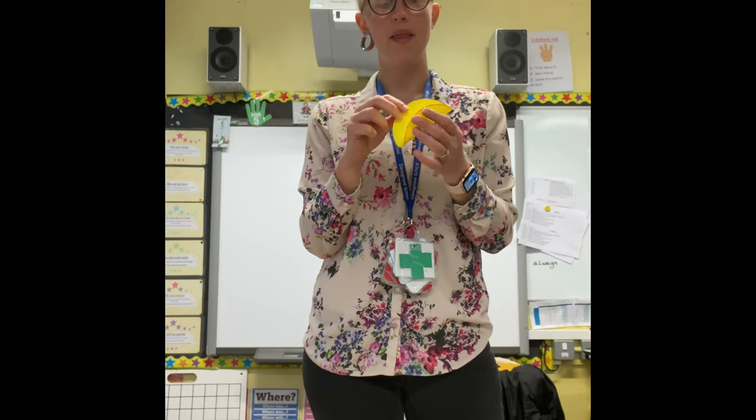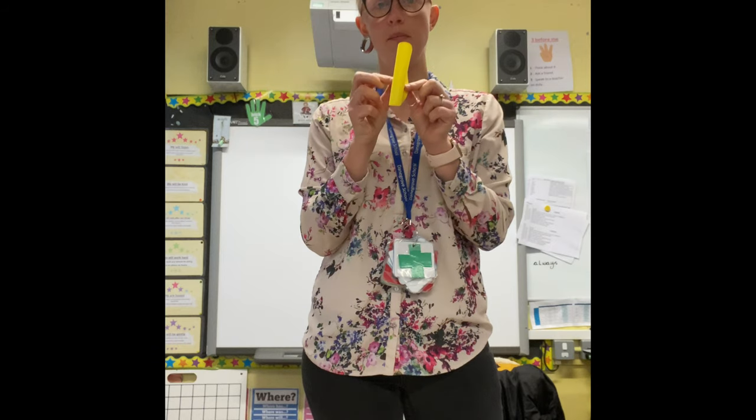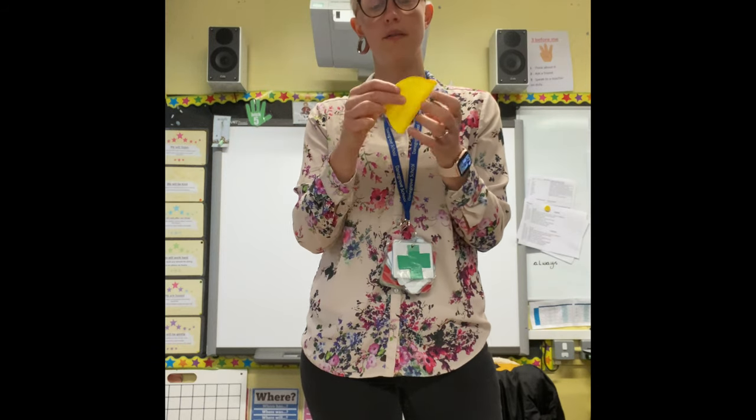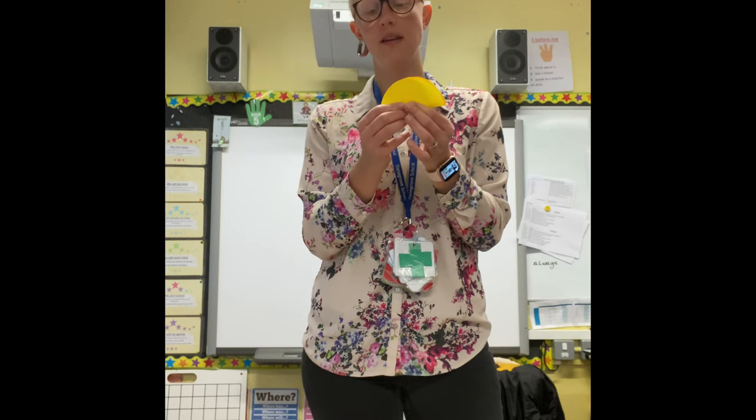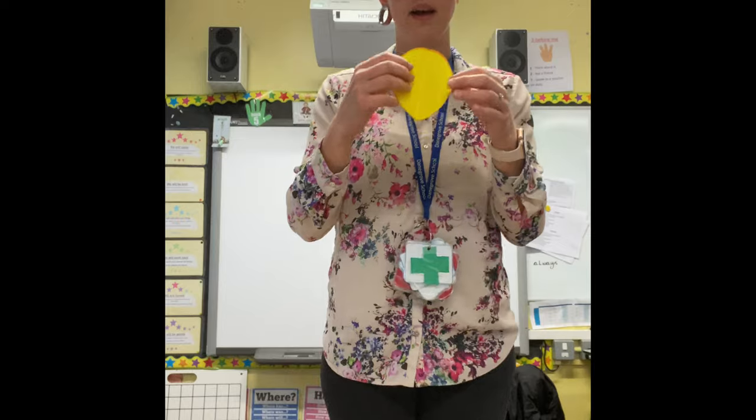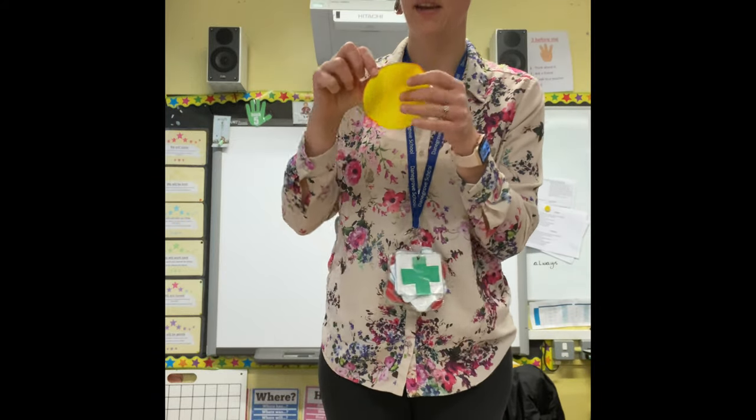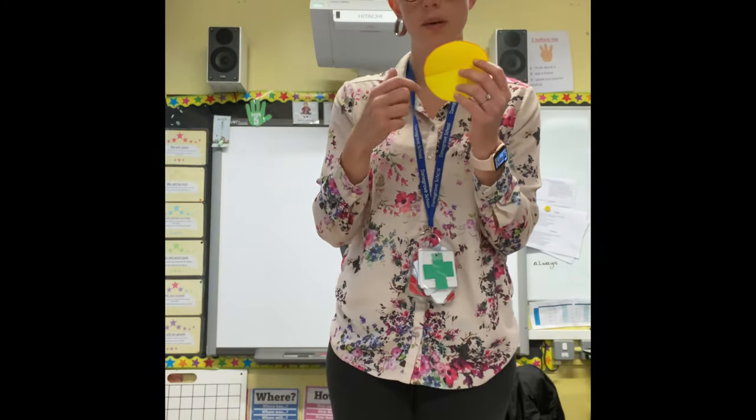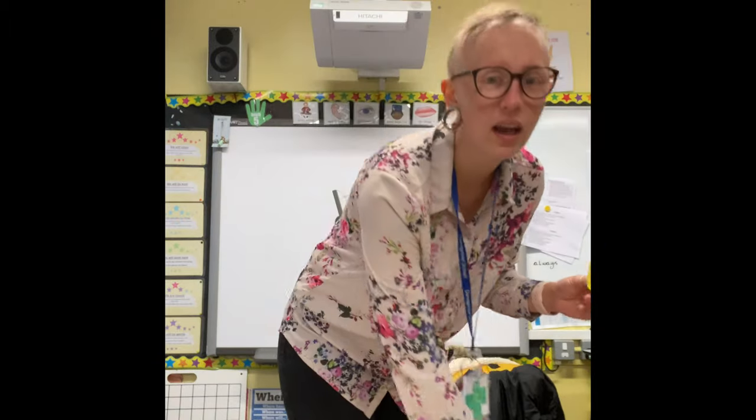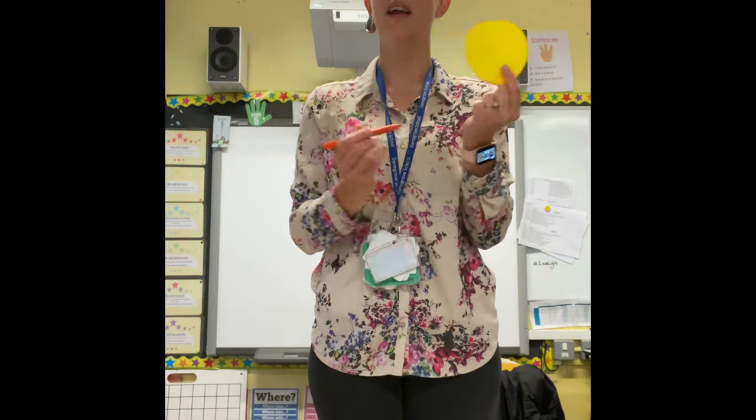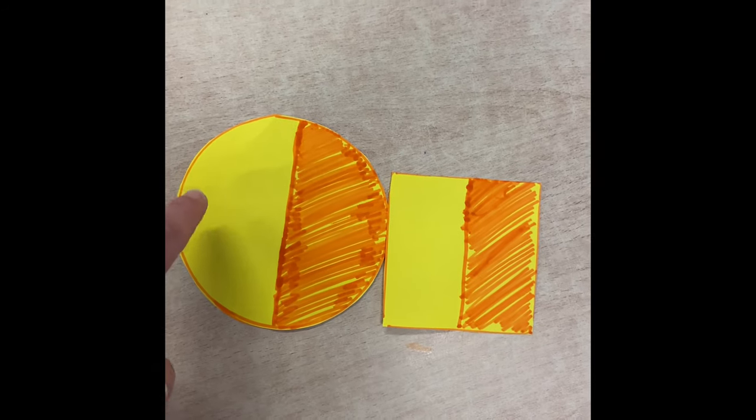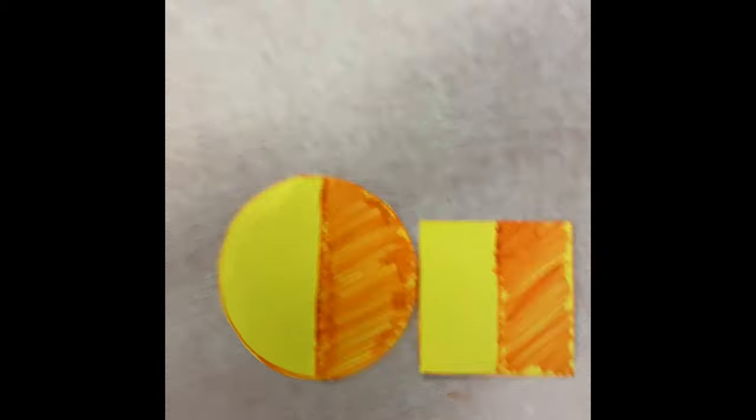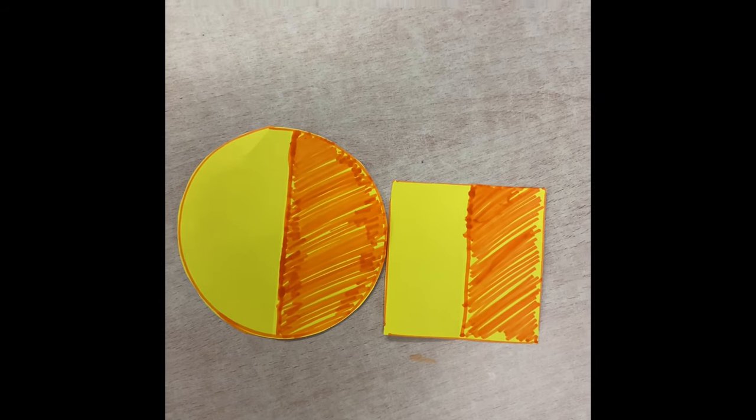So I have my circle and the best way of finding half is simply to fold it in half. Let's have a look. Make sure it's nice and neat. Give it a nice crisp line. And now I can see really clearly the two halves of my shape. And what I can do next is get a colored pen and I can color that in. So as you can see, I have colored half of my shapes. How many shapes can you find half of?